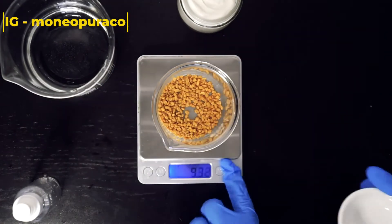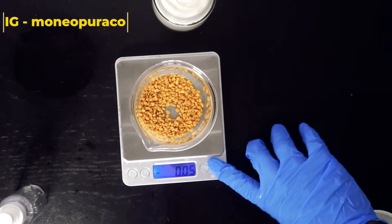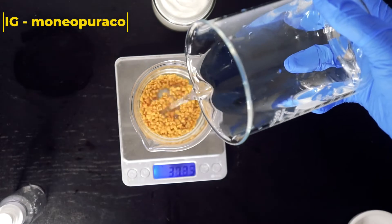So add 10 grams of your fenugreek seed to your container and then we're going to be adding 150 grams of distilled water.